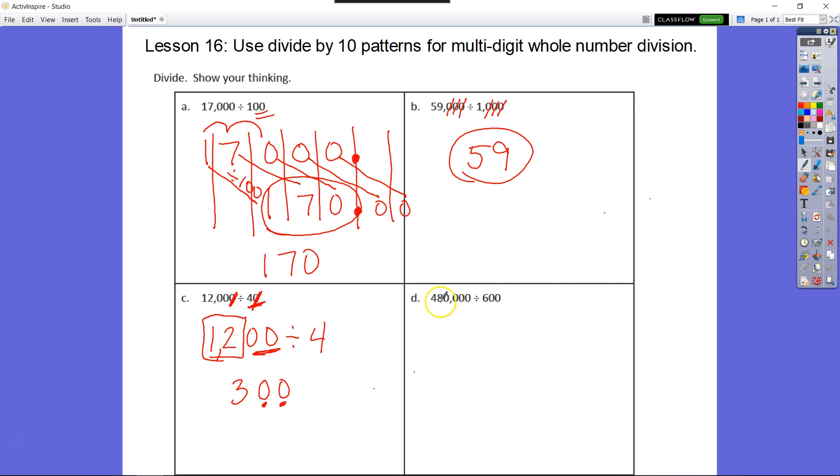All right, so same thing. Let's take another look here. We have 480,000 divided by 600. So we can divide by 100, and now we have 4,800 divided by six.